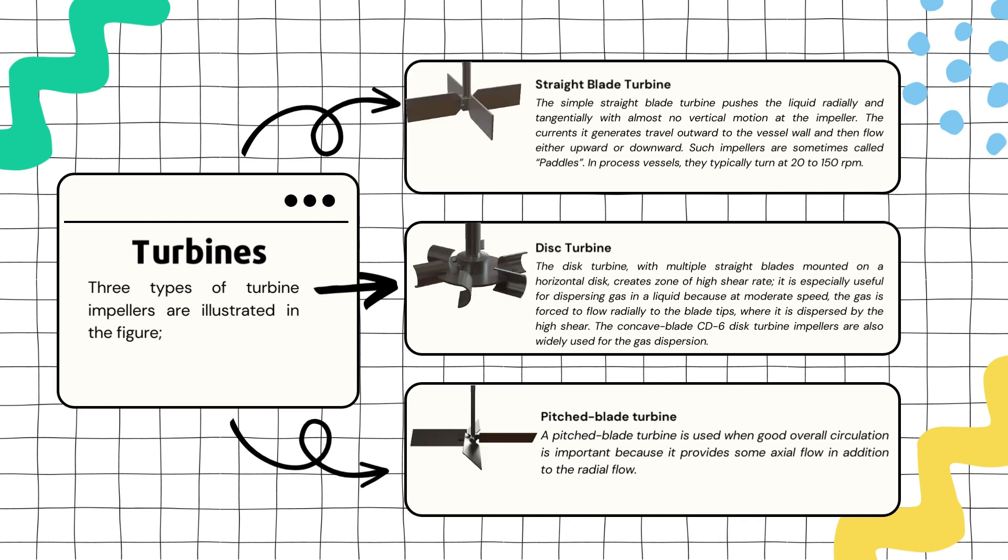This type of impeller has straight blades and mainly pushes the liquid outwards in a radial and tangential direction without much vertical movement. The currents it creates move towards the wall of the container and can then flow either upward or downward. Think of it like a paddle wheel turning slowly in a process vessel, typically at speeds ranging from 20 to 150 RPM.